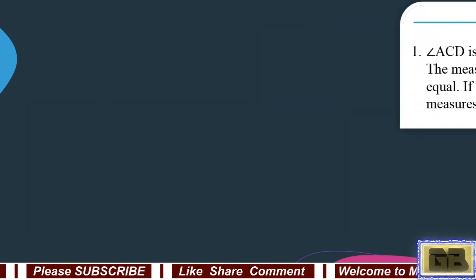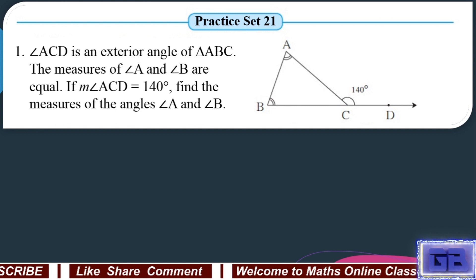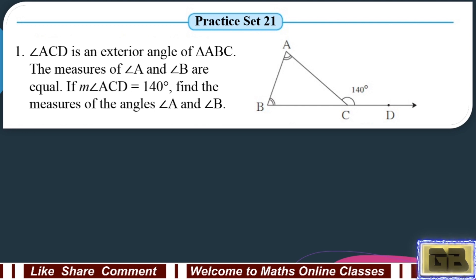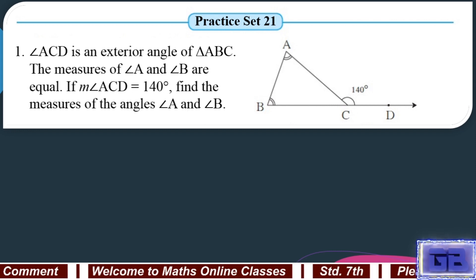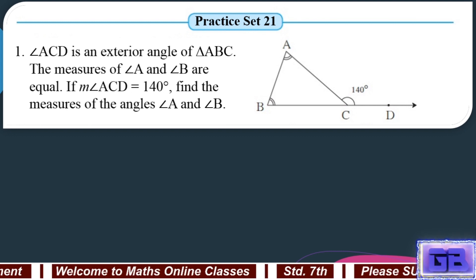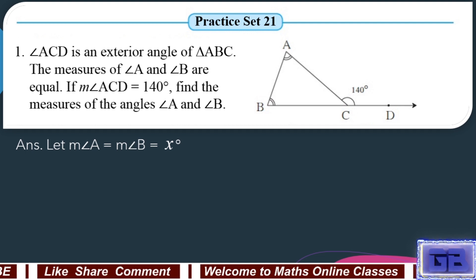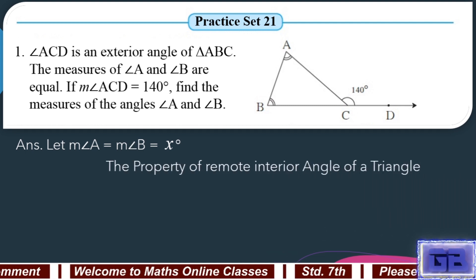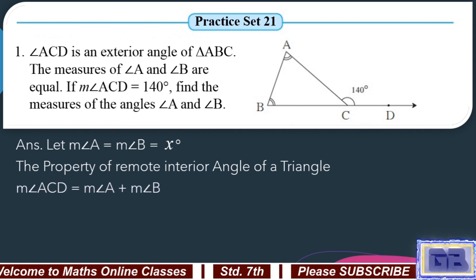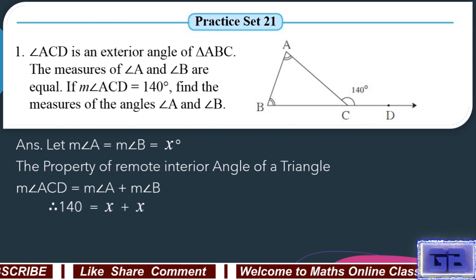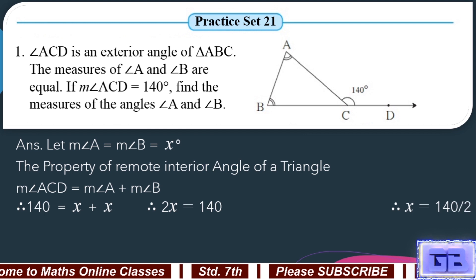The measure of an exterior angle of a triangle is equal to the sum of the measures of its remote interior angles. Now let us solve Practice Set 2.1, Question 1. Angle ACD is an exterior angle of triangle ABC. The measures of angle A and angle B are equal. If the measure of angle ACD equals 140 degrees, let measure of angle A equals measure of angle B equals x degrees. By the property of remote interior angles: measure of angle ACD equals measure of angle A plus measure of angle B. Therefore, 140 equals x plus x, so 2x equals 140.